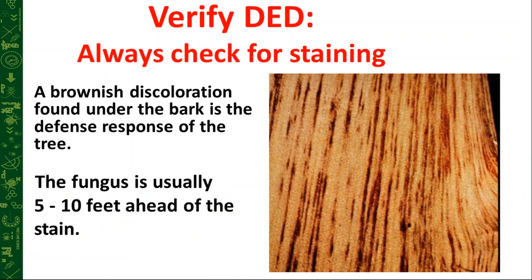When suspecting Dutch elm disease, a major diagnostic feature to verify is wood staining — the brownish discoloration under the bark resulting from tylosis formation. The fungus is typically five to ten feet ahead of where the staining actually is, so you're reading where it's already been. Cut a branch in the area of active infection, peel the bark with a sharp knife, and look for that staining. A normal branch has a creamy or buttery color without streaks.